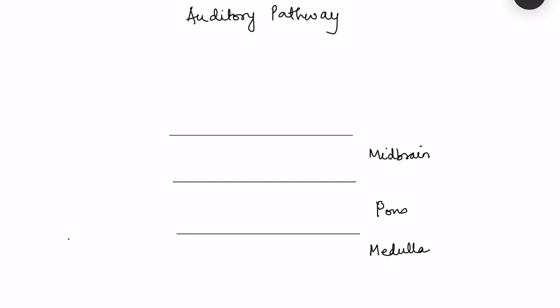The auditory pathway starts from hair cells present in the cochlea. These hair cells are of two types: outer hair cells and inner hair cells. Both receive afferent and efferent fibers. However, major afferents come from inner hair cells and major efferents go to the outer hair cells, though both have afferents and efferents.